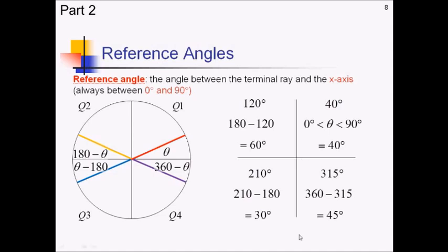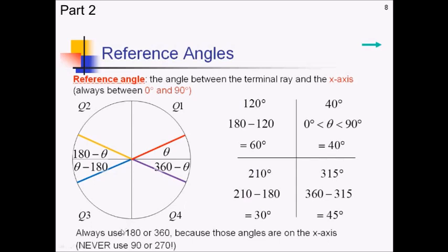So the key to reference angles is you always want them to be positive, and you're always going to do some kind of subtraction using 180 or 360 because those are your x-axis angles. We never use 90 or 270 because then we would be talking about the y-axis, and we don't care about the y-axis, just the x-axis.